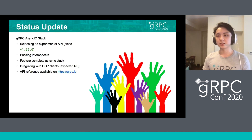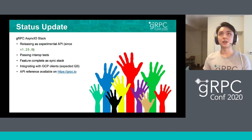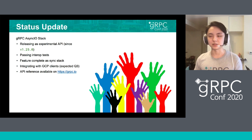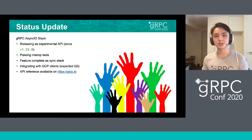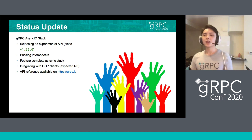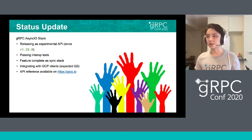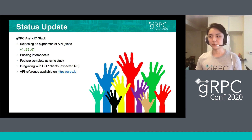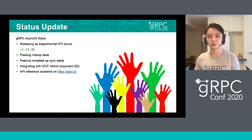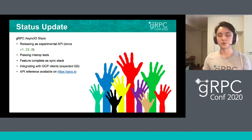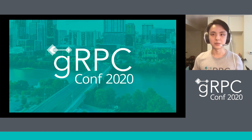Finally, a status update about the gRPC asyncio stack. It has been releasing as experimental API since version 1.25. And it passes all the internal tests, which means it can communicate well with all historical versions of gRPC and other gRPC language implementations. It's now feature complete with the sync stack. We are trying to integrate it with Google Cloud Platform clients, and some of them are expected to release in Q3 of 2020. You can find the API reference on grpc.io for more information. Thank you, that was my presentation.